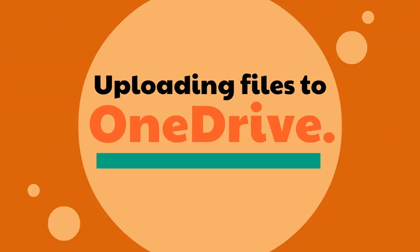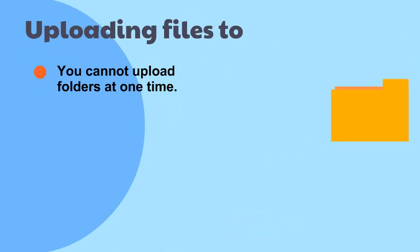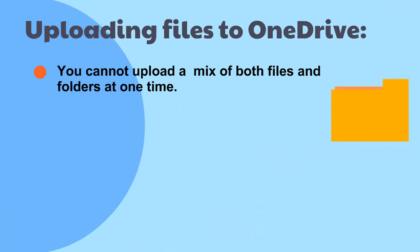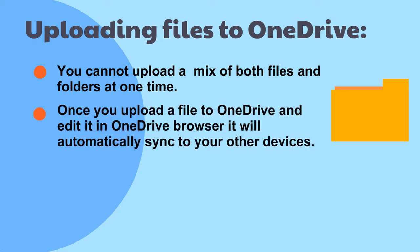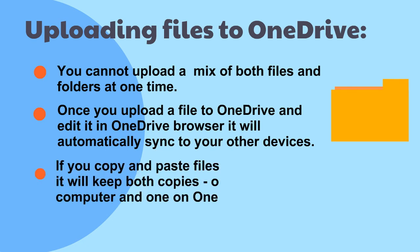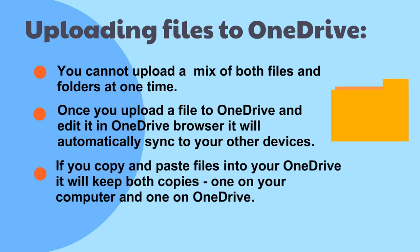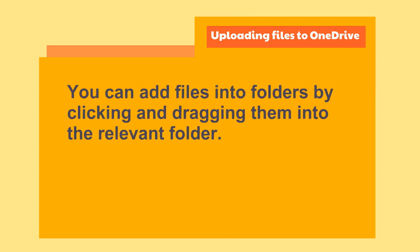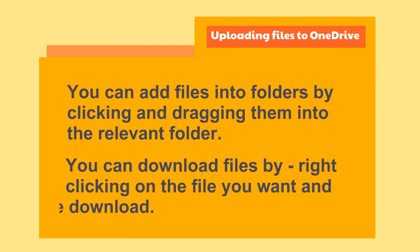Uploading files to OneDrive. Right click on the file and click copy. If allow editing is checked, then anyone can edit the file if you shared it with them. If allow editing is off, then they can only view the file and cannot edit it. You can add files into folders by clicking and dragging them into the relevant folder. You can download files by right clicking on the file you want and then choosing download.